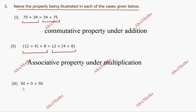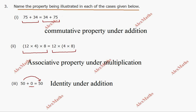Subdivision 3: 50 plus 0 equals 50. When zero is added to a number, the result is the original number. This is the identity property under addition. Zero is the additive identity.